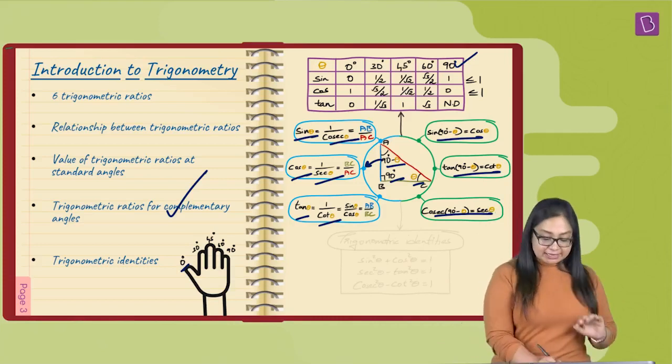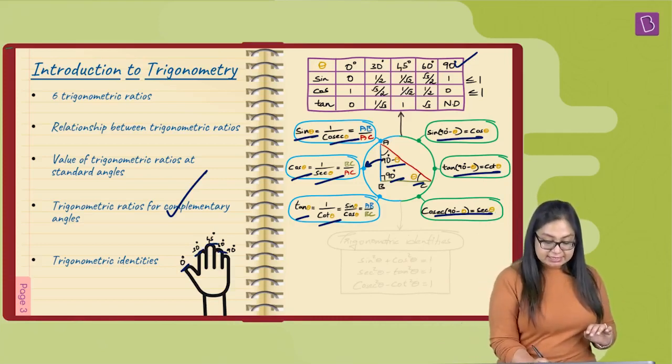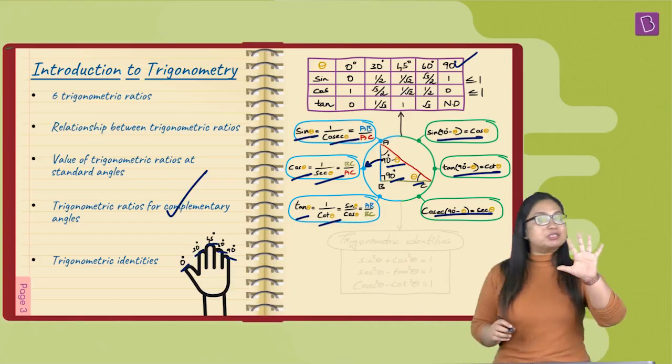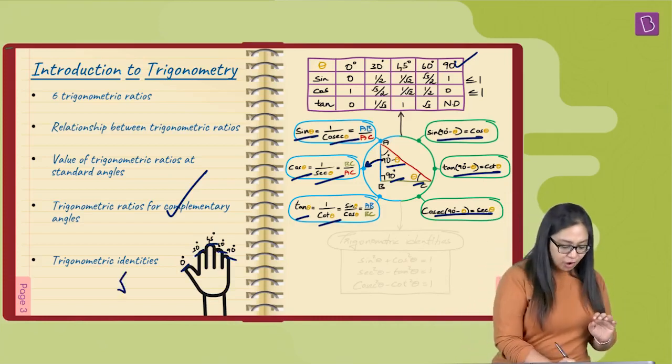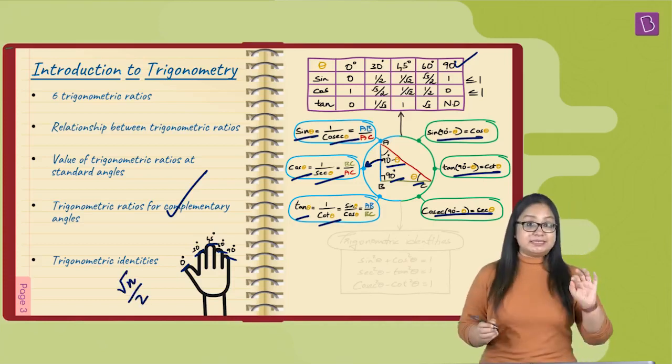And then, you are looking at root over of n by 2, basically. Say you want to find out a sine or cos of 60 degrees. So, what do you do?